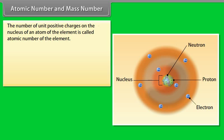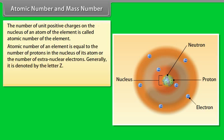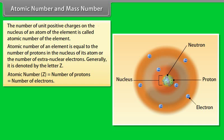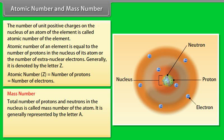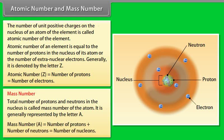Atomic number and mass number: The number of unit positive charges on the nucleus is called the atomic number Z. Atomic number Z equals the number of protons equals the number of extranuclear electrons. Mass number A is the total number of protons and neutrons in the nucleus. Mass number A equals number of protons plus number of neutrons, equals number of nucleons.